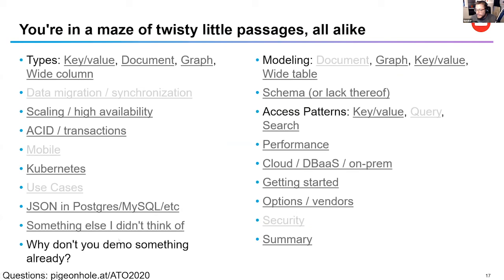Another question: can you describe the basic working structure of NoSQL? That's a broad question. I can focus on one of the four main types: key-value, document, graph, or wide column, if you want to narrow it down.